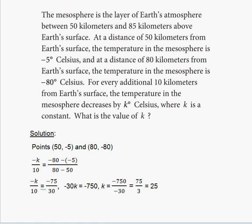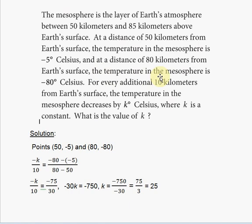The mesosphere is the layer of atmosphere between 50 kilometers and 85 kilometers above Earth's surface. At a distance of 50 kilometers from Earth's surface, the temperature in the mesosphere is negative 5 degrees Celsius, and at 80 kilometers it is minus 80 degrees Celsius. For every additional 10 kilometers from Earth's surface, the temperature decreases by k degrees Celsius, where k is a constant. What is the value of k?